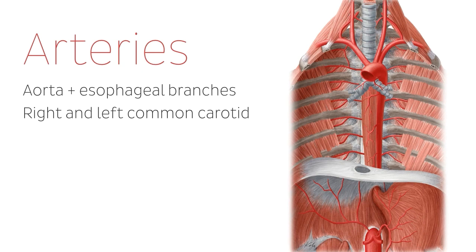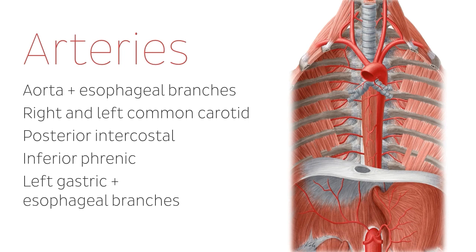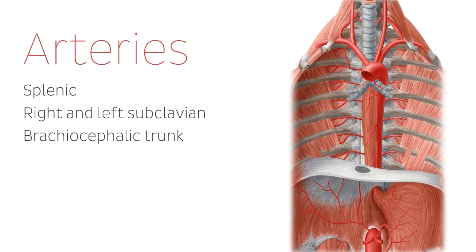We're also going to talk about the right and left common carotid, the posterior intercostal arteries which you see here on this image, the inferior phrenic, the left gastric, some esophageal branches, the common hepatic artery, the splenic artery, the right and left subclavian arteries, the brachiocephalic trunk seen here on this image as well, and the thyrocervical trunk. All of these structures are arteries found on this image and they are connected to one another.